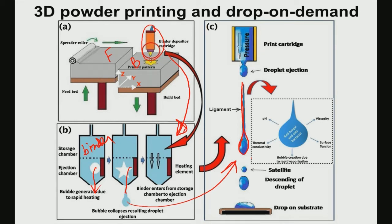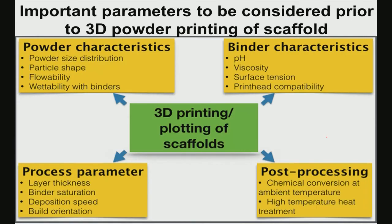Fluid mechanics is relevant in 3D powder printing. The binder forms satellite droplets that descend and interact with the powder. The important binder properties are: pH, thermal conductivity, viscosity, and surface tension. Once the droplet is ejected, it integrates into the powder.